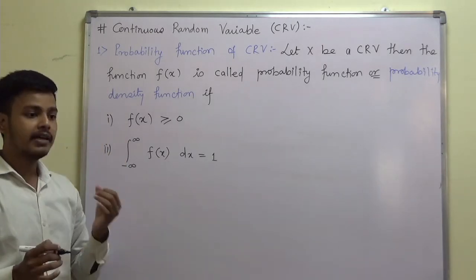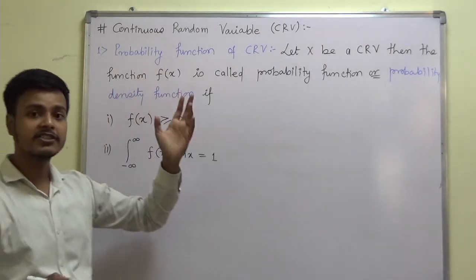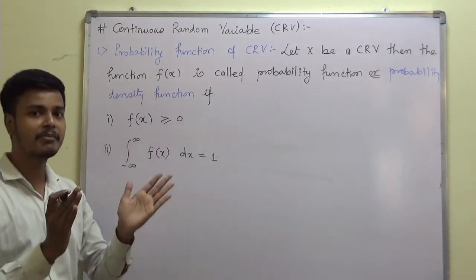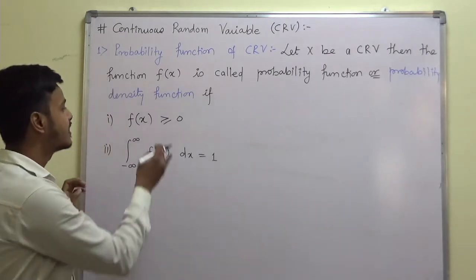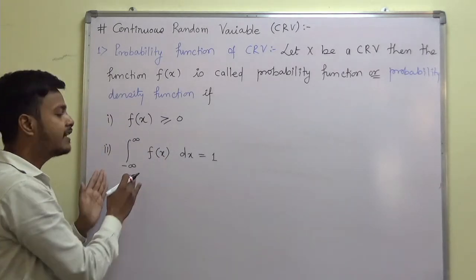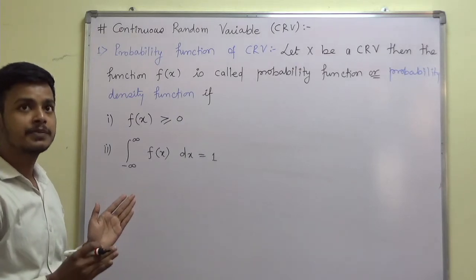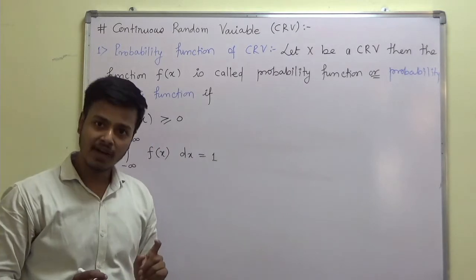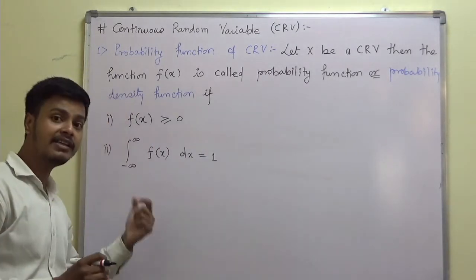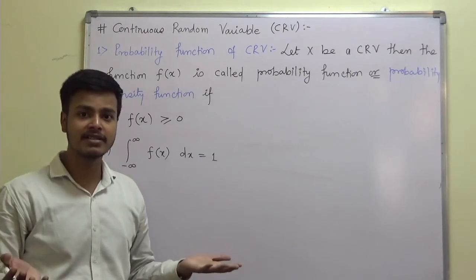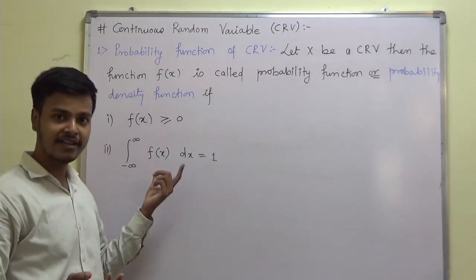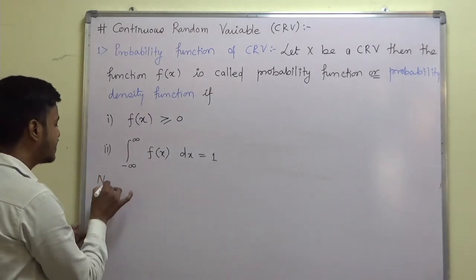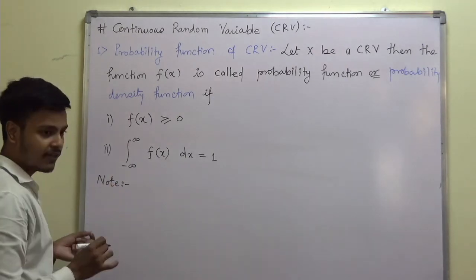If you remember the definition of the probability function for the discrete random variable, both have the same conditions — only the way of writing is different. The first condition is identical. The second condition was the sum of all probabilities equal to 1. There was a sum, but here it is a continuous sum, and the continuous sum is nothing but integration.